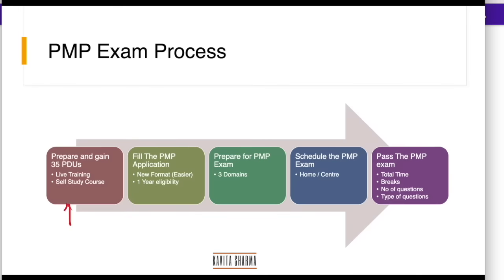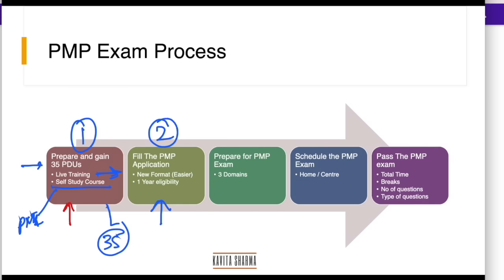First, you need to get 35 PDUs — you have a choice of live training or a self-study course. Go to PMI for a self-study course, or do a live training from whoever you would want to. That's step one. Step two is filing the PMP application. Once you have 35 PDUs, you file the PMP application. It has become easier. I have released a video on how to file the PMP application 2021 — have a look at that.